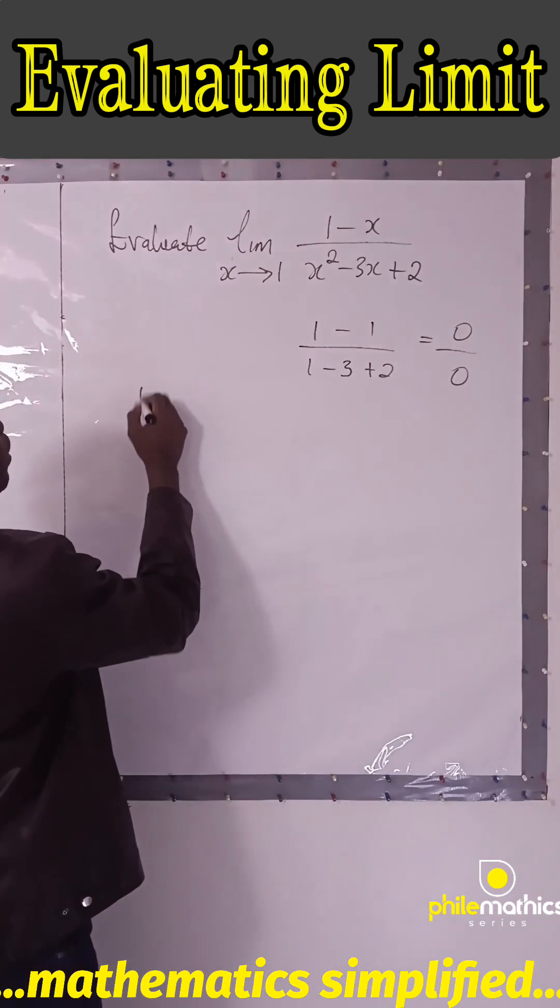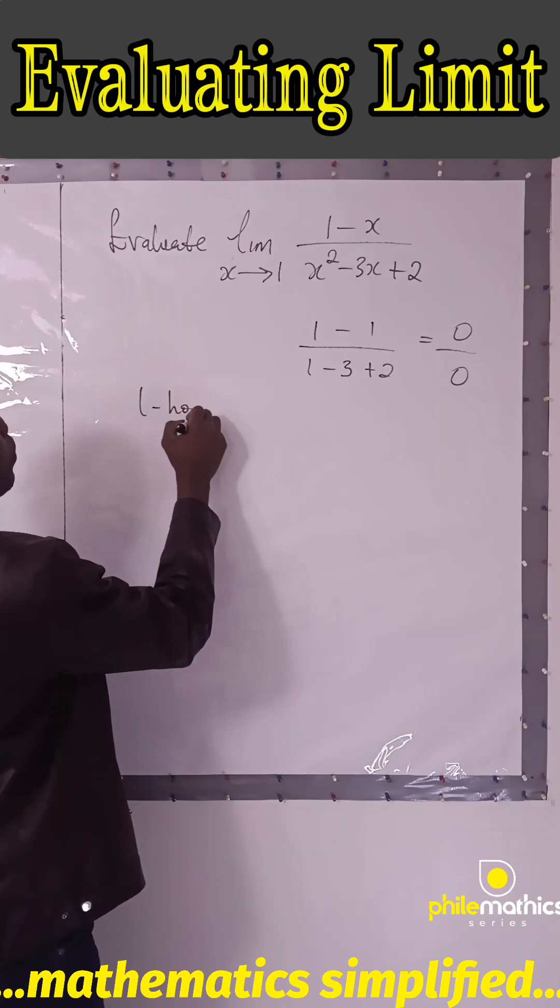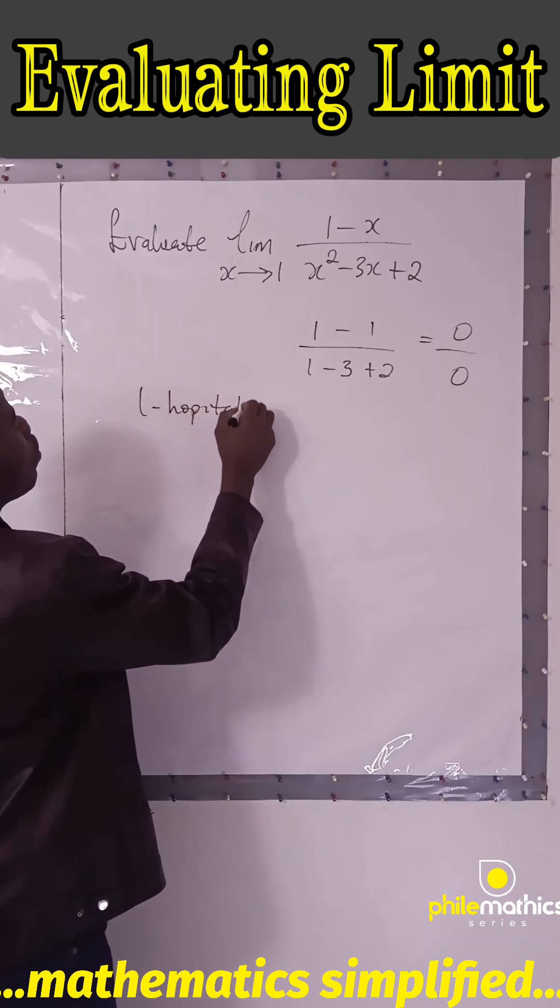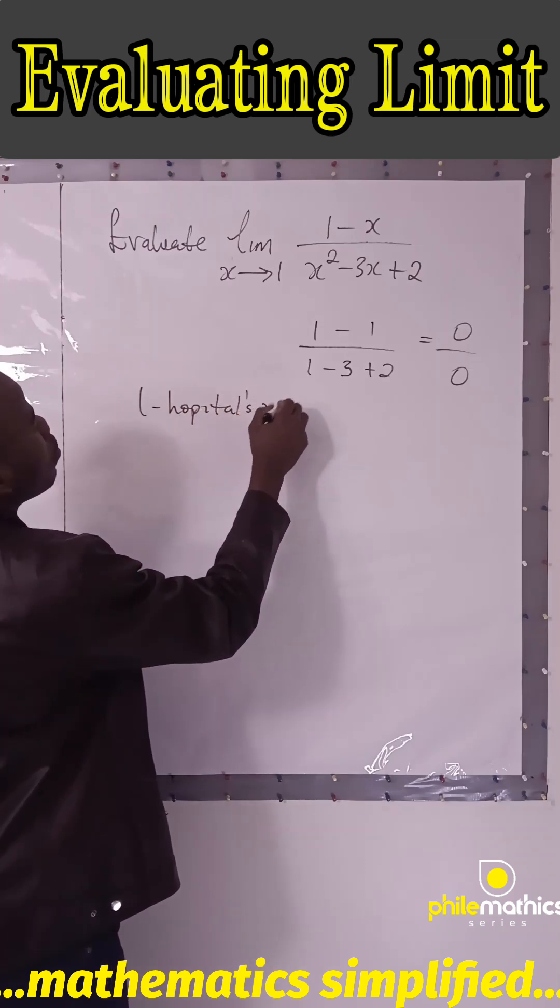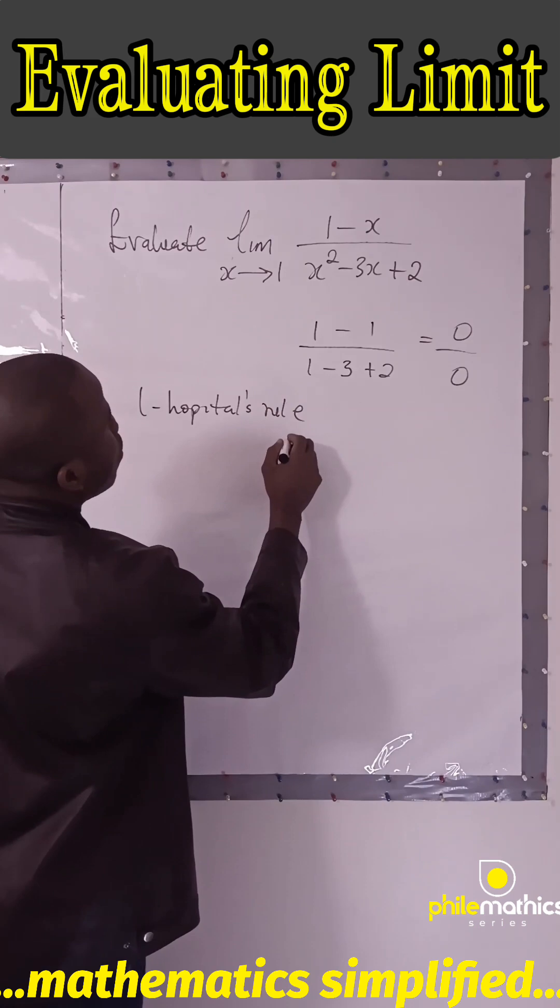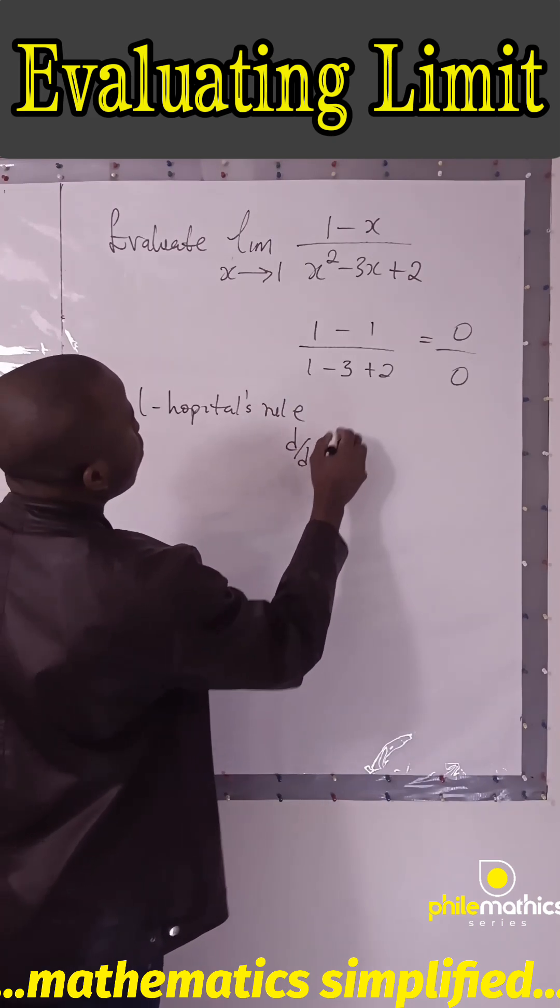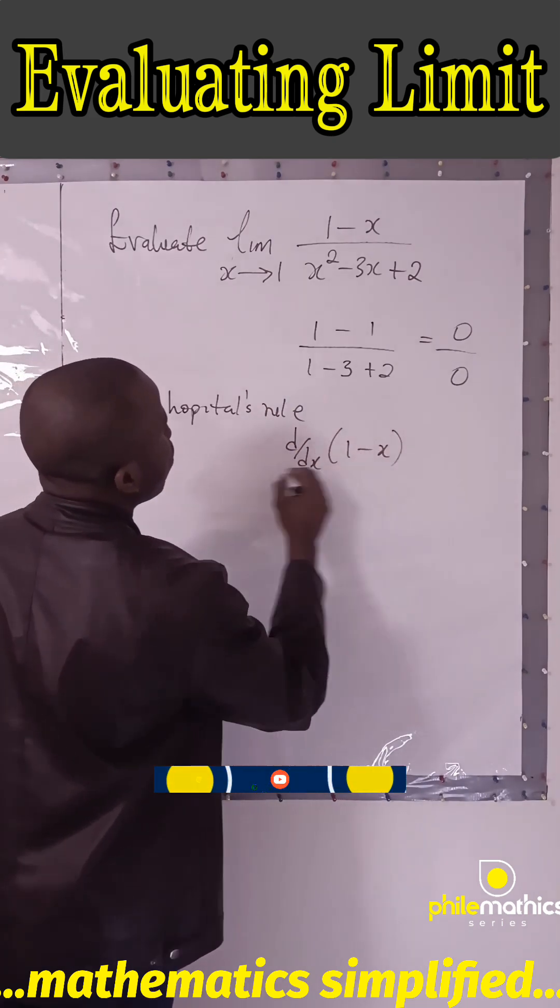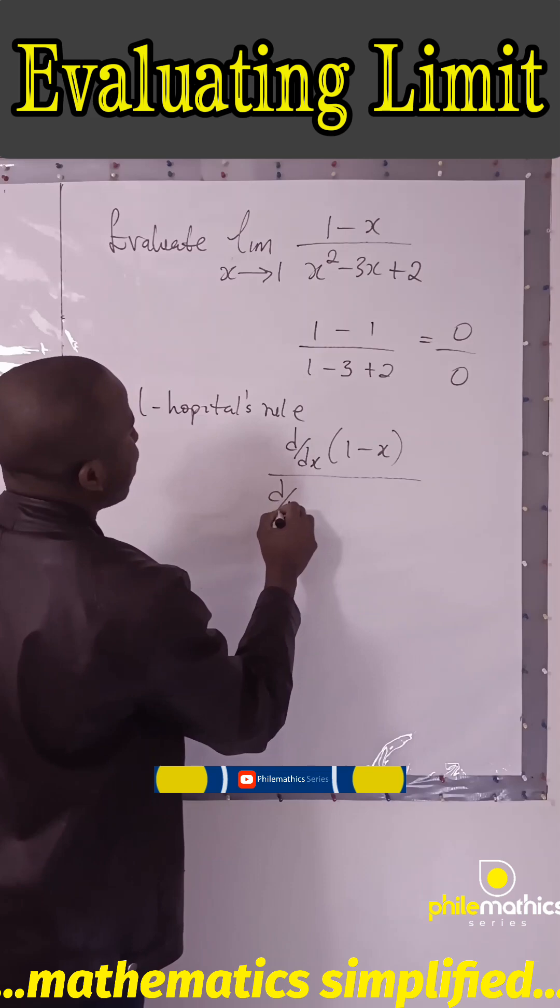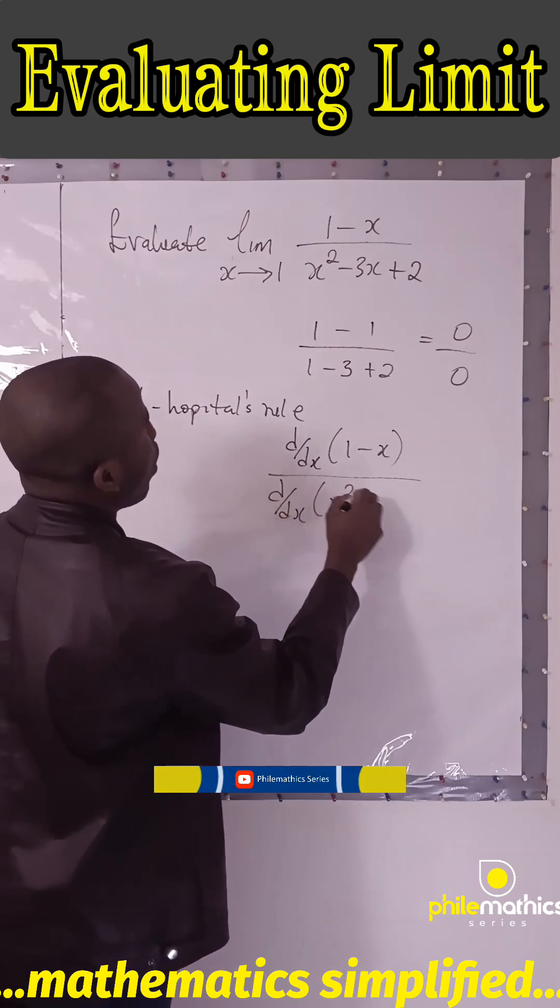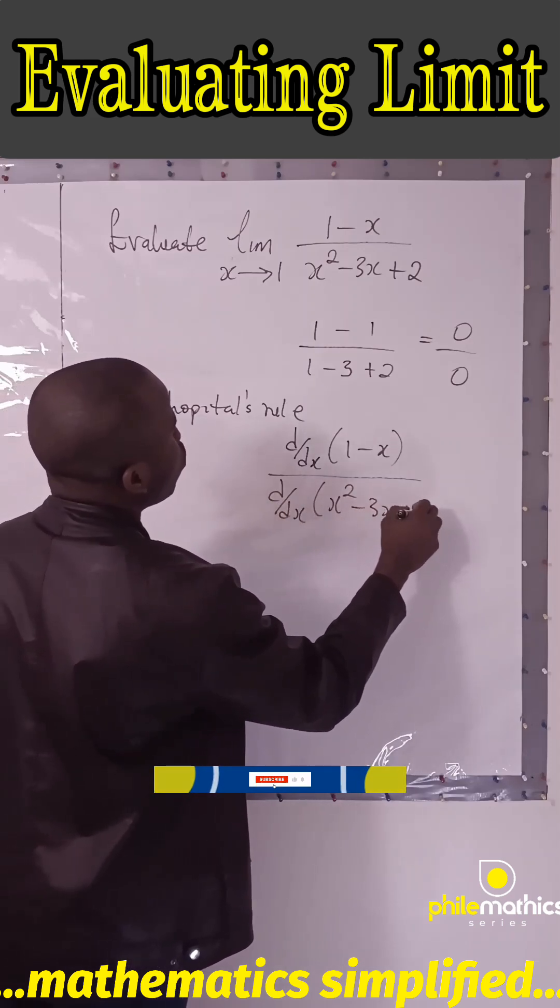Applying L'Hôpital's rule, we'll have d/dx of (1 minus x) over d/dx of (x squared minus 3x plus 2).